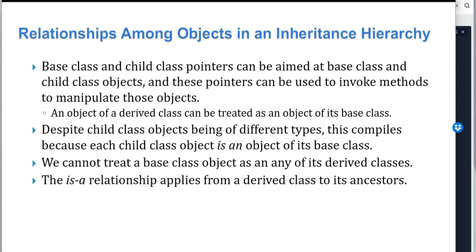Base class and child class pointers can be aimed at base class and child class objects, and these pointers can be used to invoke methods to manipulate those objects. An object of a derived class can be treated as an object of its base class. Despite child class objects being of different types, this compiles because each child class is an implementation of its base class. We cannot treat a base class as the name of its derived classes. The is-a relationship applies from a derived or child class to its ancestors.